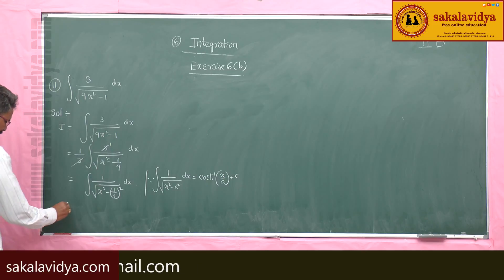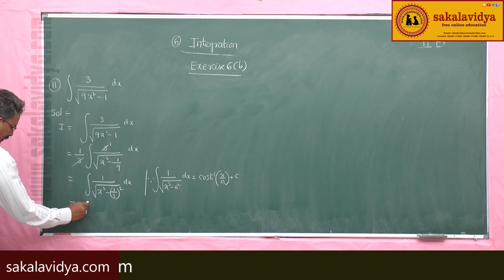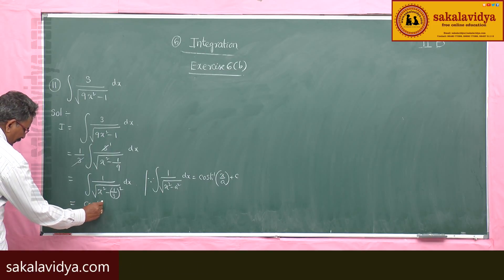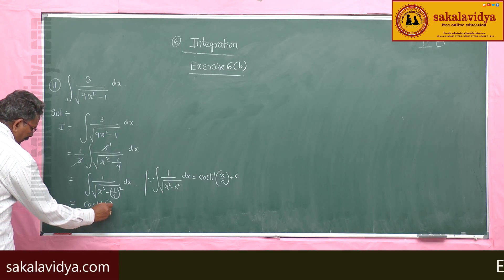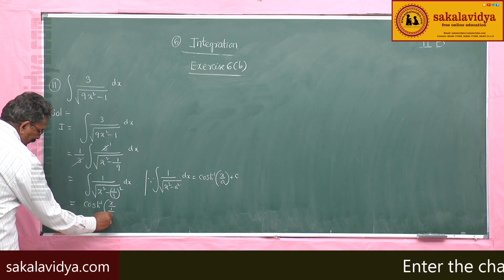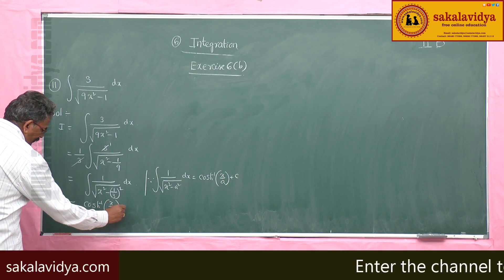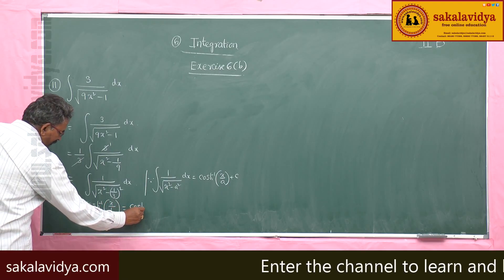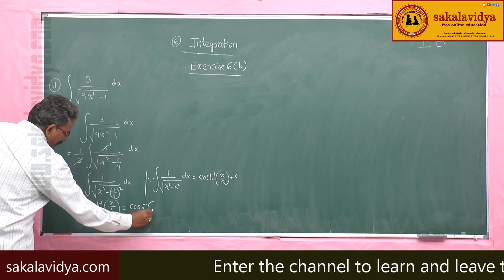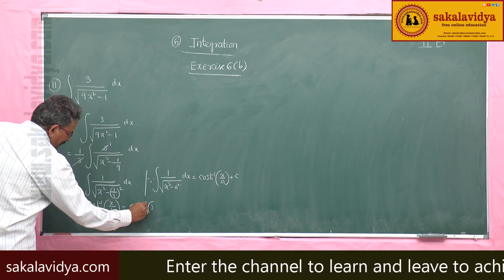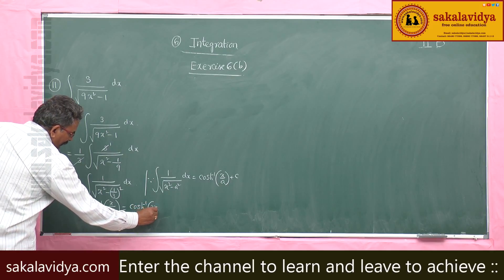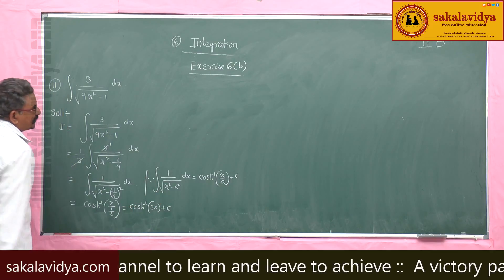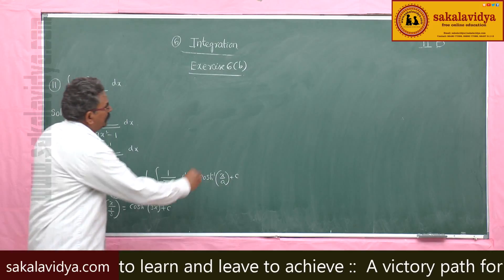So this can be written as cosh⁻¹(x divided by 1/3), which equals cosh⁻¹(3x) plus constant of integration. Now let us move to the next problem, that is Problem 12.